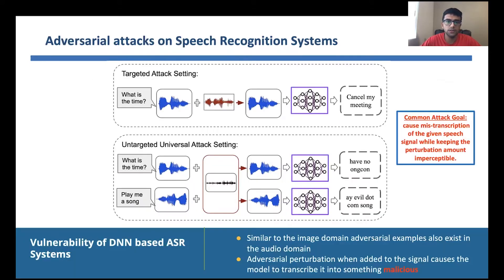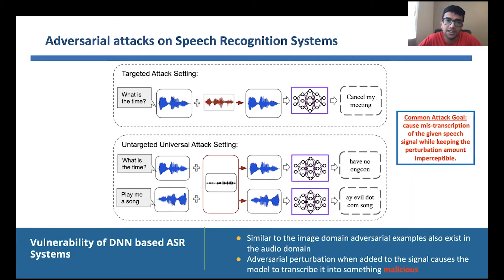One of the commonly studied threats against ASR systems is adversarial attacks. An adversarial example is any slightly modified input that causes the network to make an error, and it has been shown that neural networks in various image and audio domains are susceptible to such attacks.